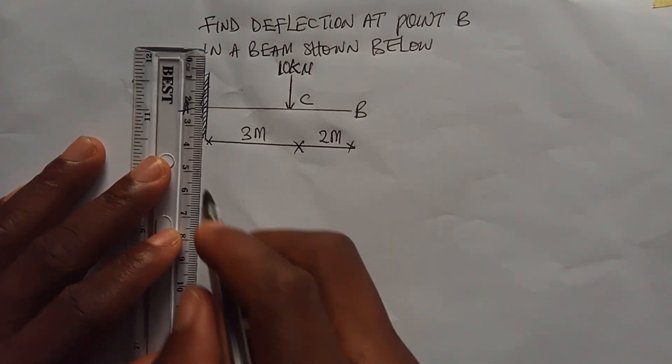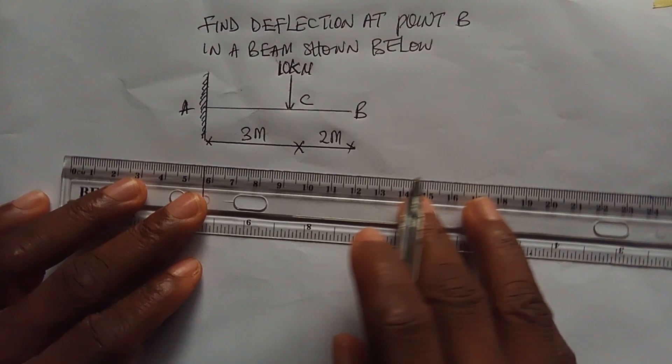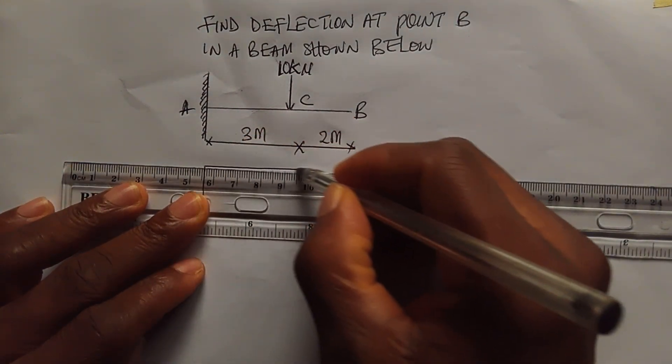So if you want to draw the bending moment diagram, it's going to look like this. Then this is your free end.